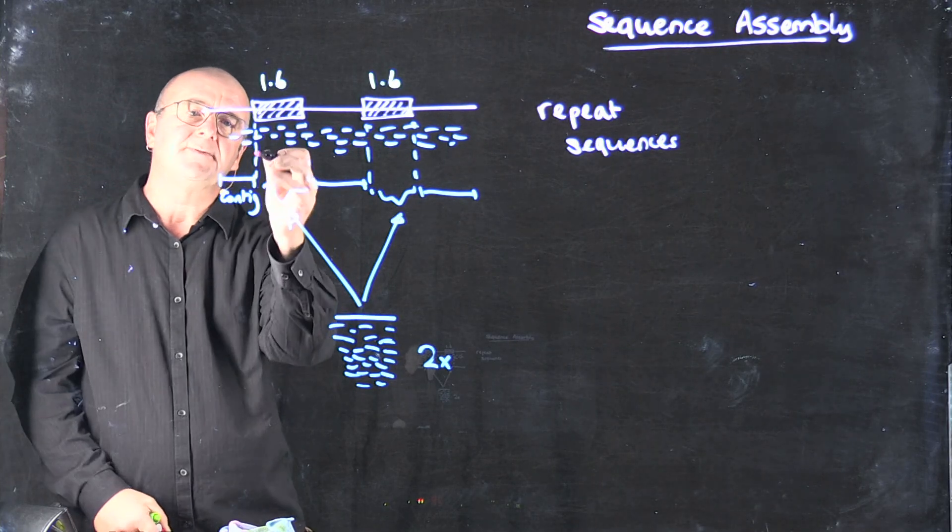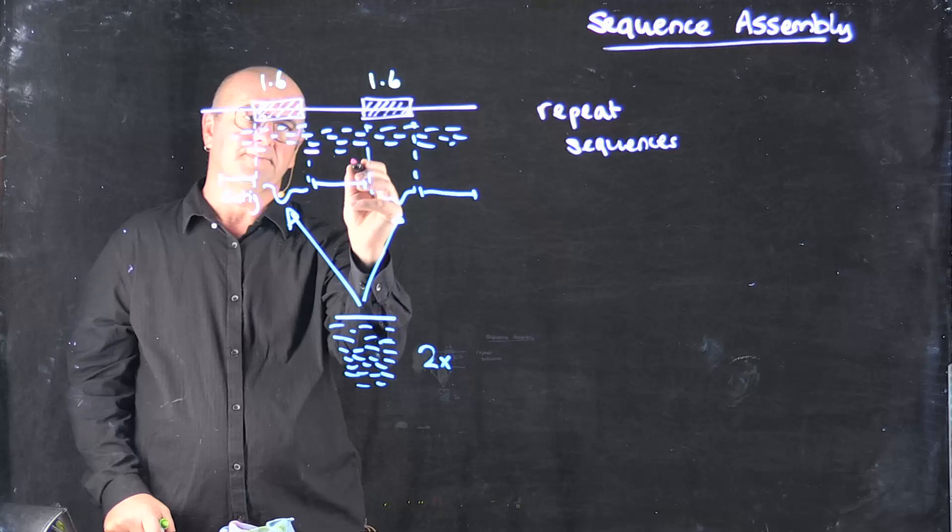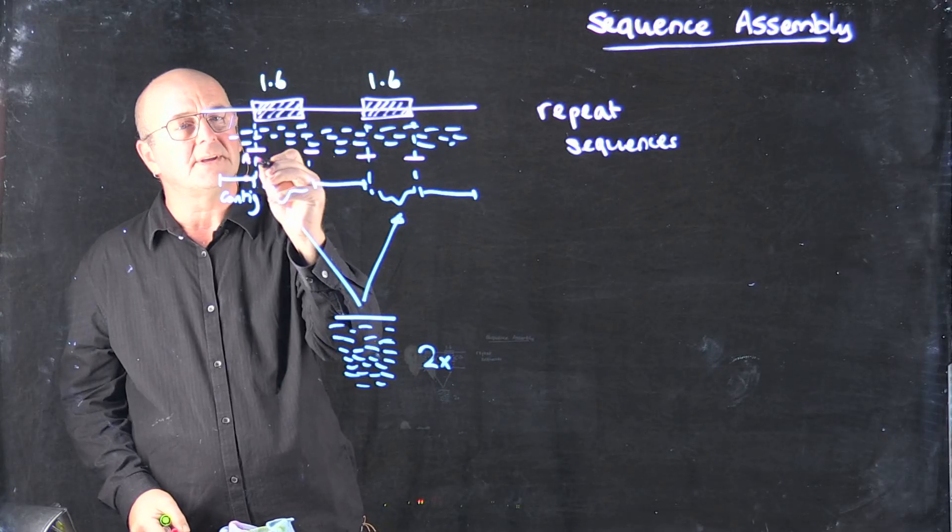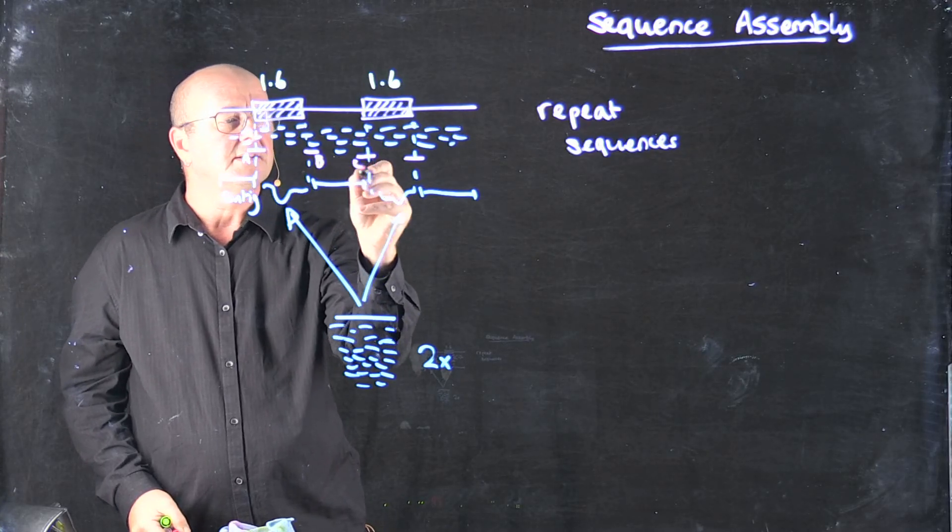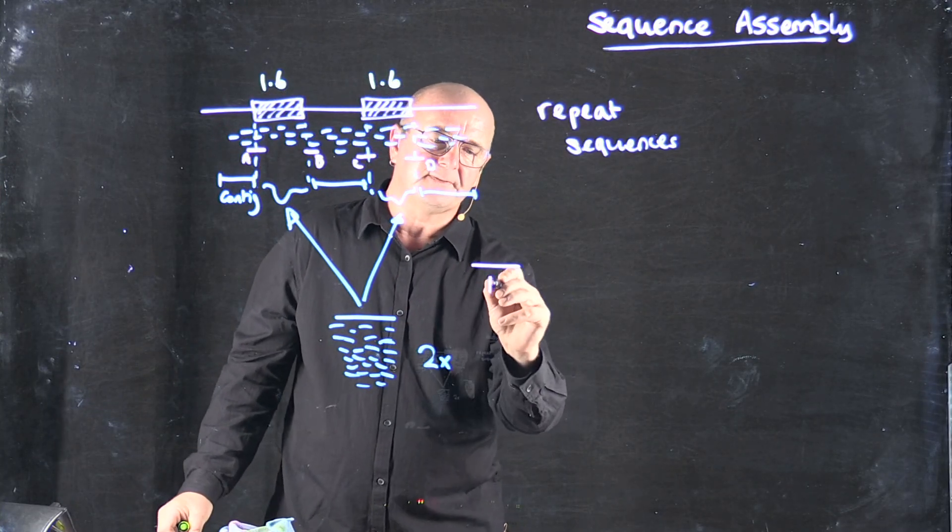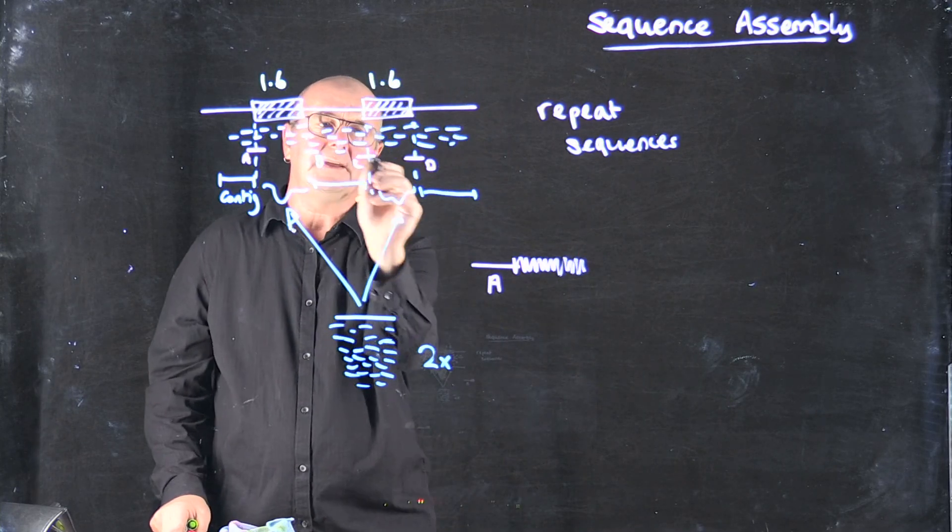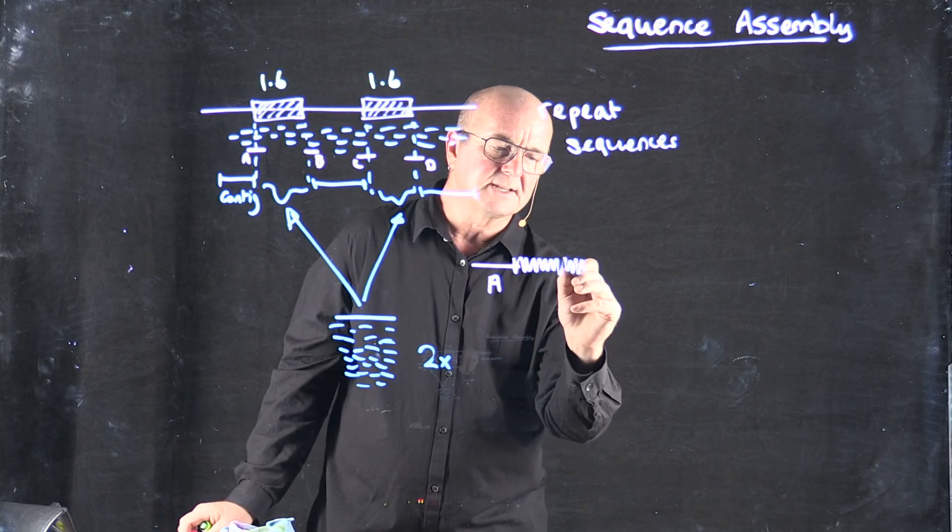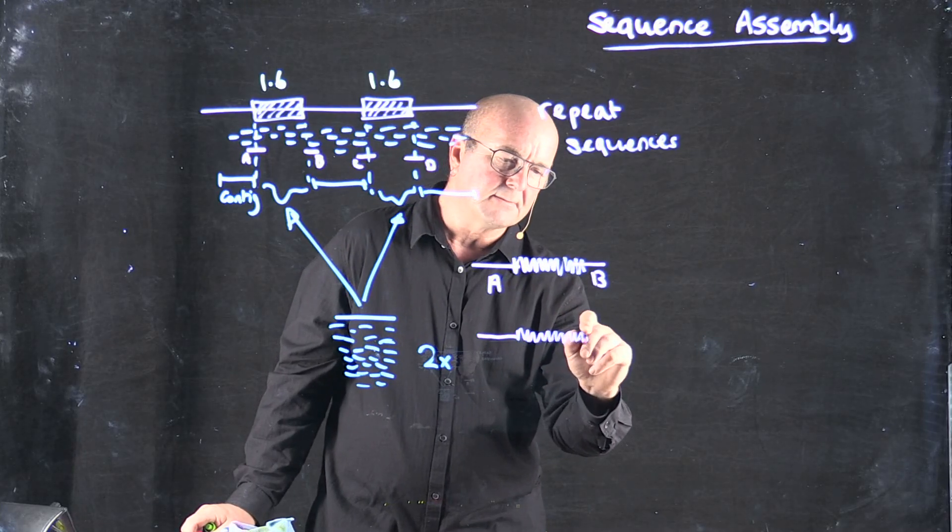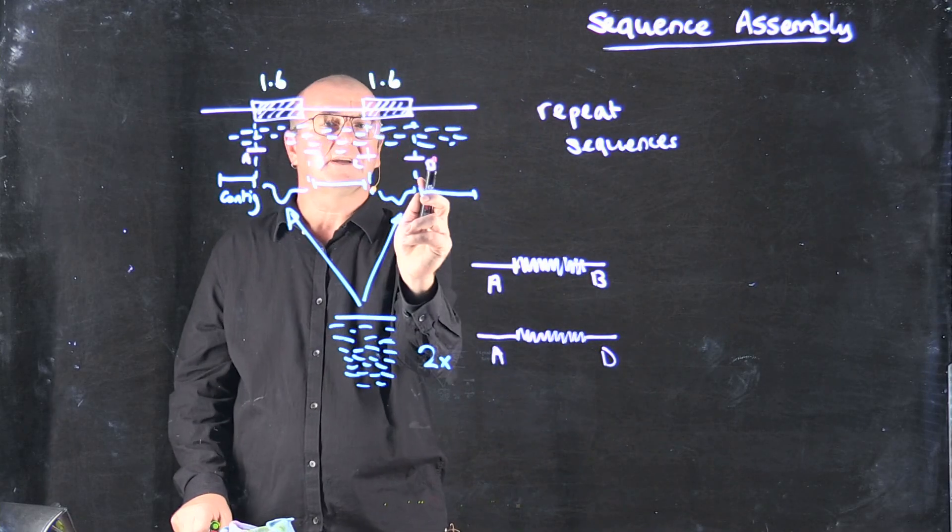Now the tricky part is that if we have a couple of reads that span into the duplication, maybe on both ends like this, then the assembler has no way of knowing... Let me label this. This is A, B, C, and D. So the assembler has no way of knowing if we start off on A and we go into the duplication, do we come out on B or do we come out on D? So one possibility is that we come out on B, and another possibility that the assembler can't separate is that A goes in and we come out in D.